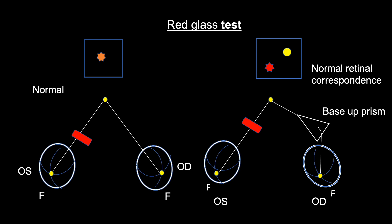If a patient has abnormal retinal correspondence, red light is seen just below the white light because of pseudofovea. But here we cannot demonstrate.